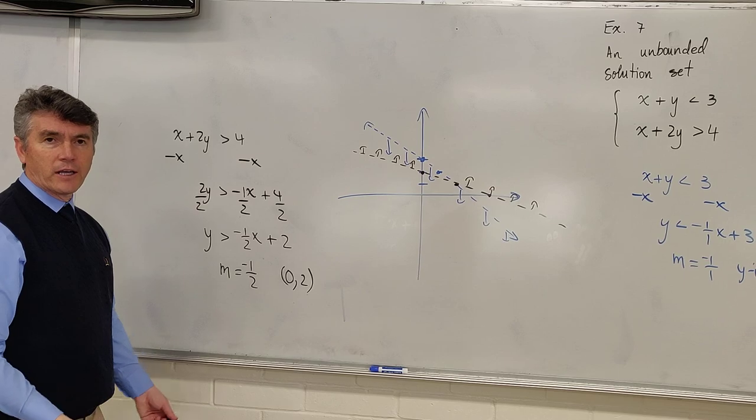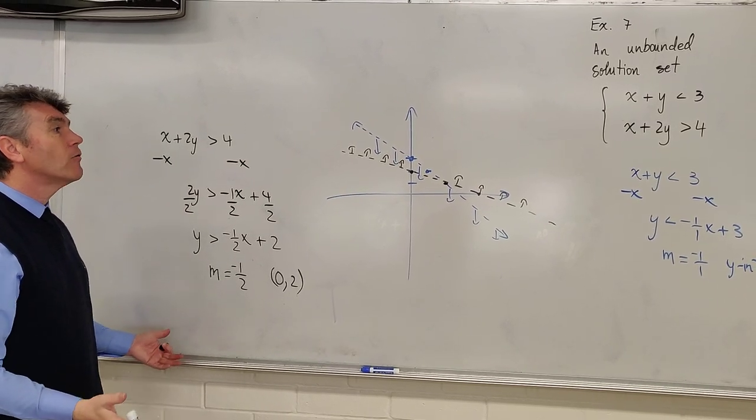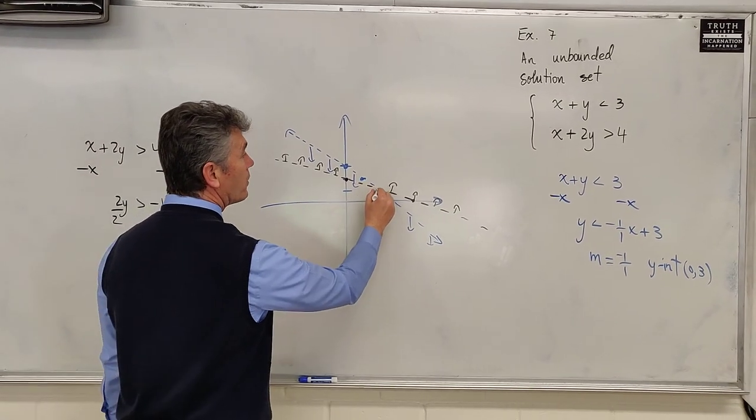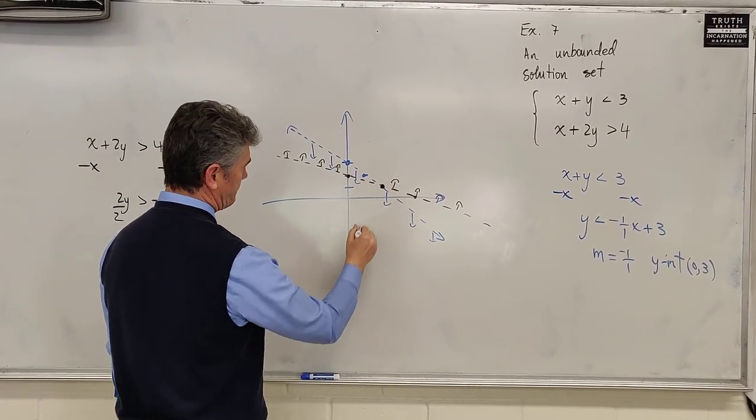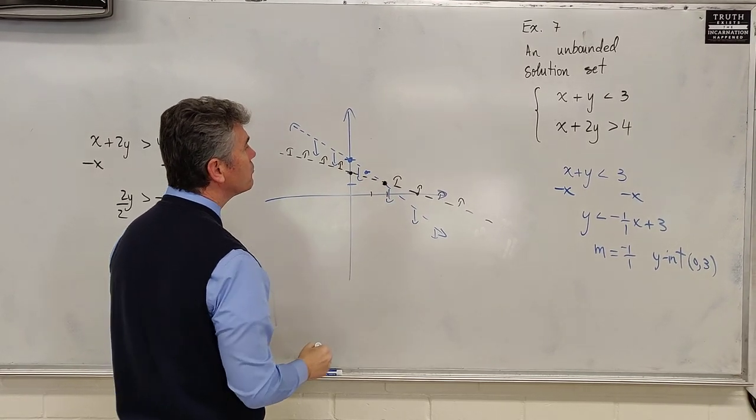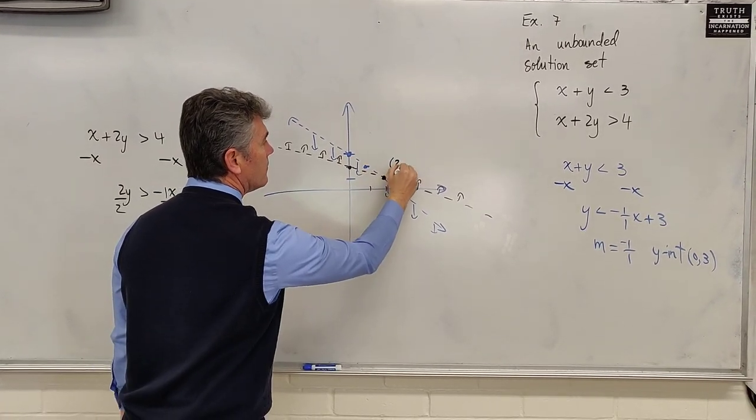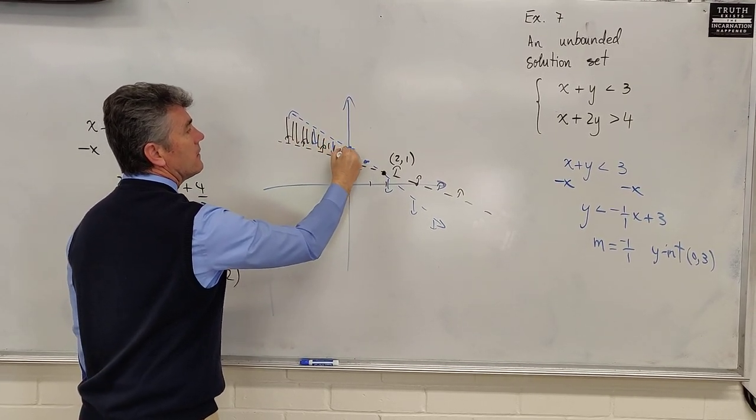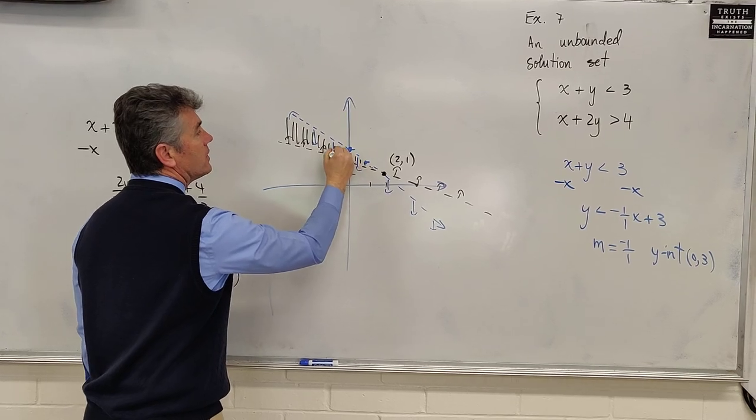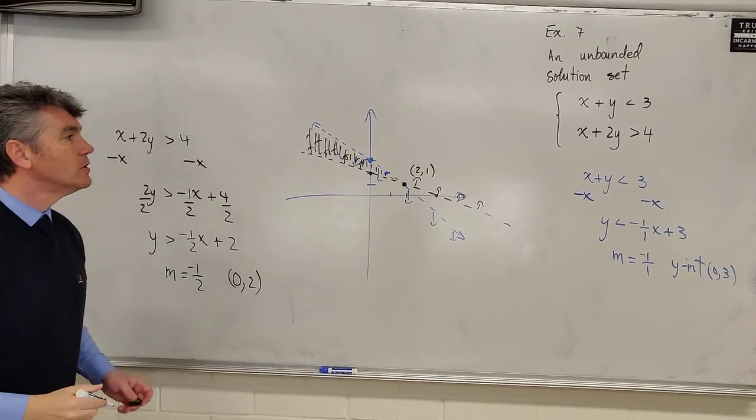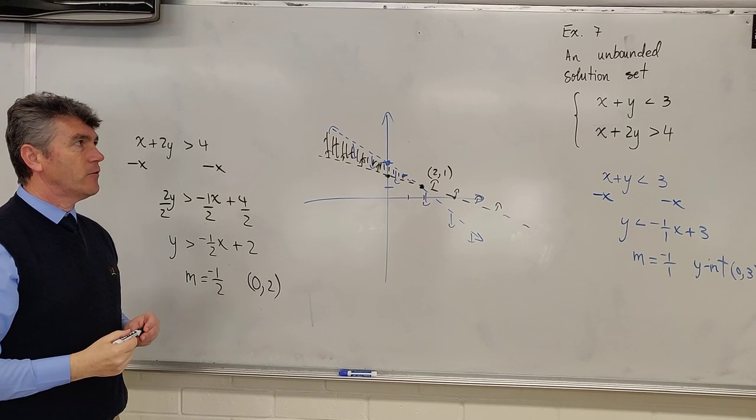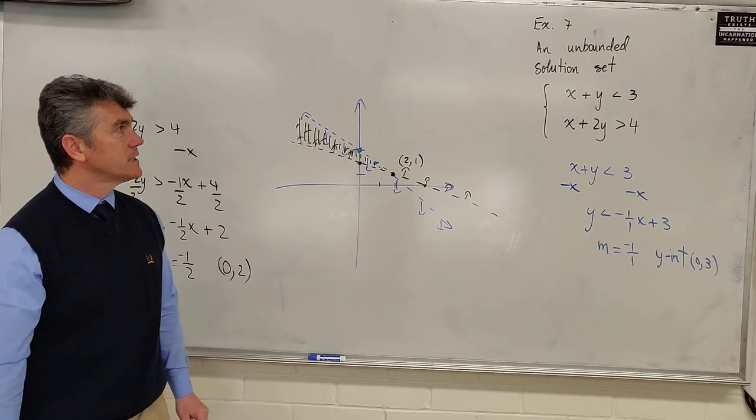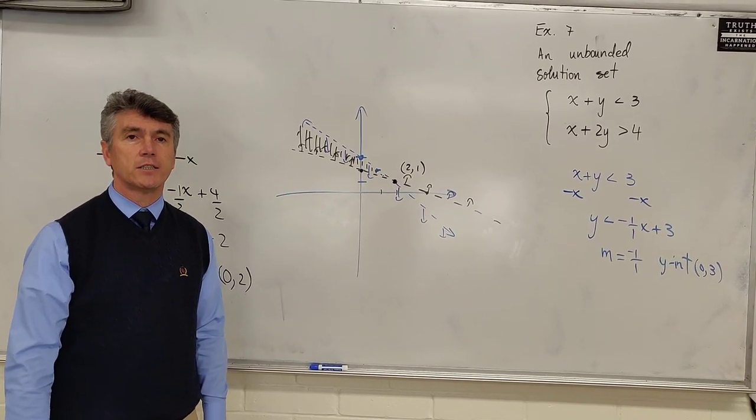We notice that we did not form a triangle. We did not form a rectangle. We did not form any shape whatsoever. There is only one point of intersection. It looks like that point is the point 2 comma 1. But that's it. One vertex. And then the region is this region in here. Any point in here is a solution to the system of equations. So that's why, because we don't form a polygon, we call this an unbounded solution set.